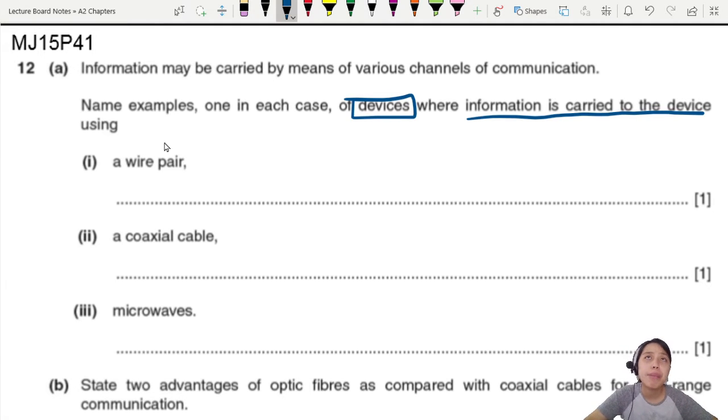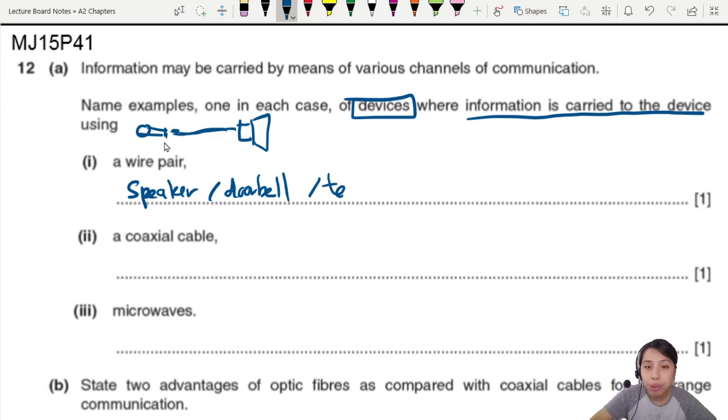Microphone, okay microphone transmit to where? Speaker! So we say speaker, the microphone wire pair to speaker - that's one example. Or you can also talk about the doorbell, ding dong, you press button. You can talk about telephone, the old old school telephone also can. Where do we have coaxial? From where go to where? To TV! So the device is TV set because you have a TV, from outside your roof, coaxial will connect to it to send the signal to the TV.